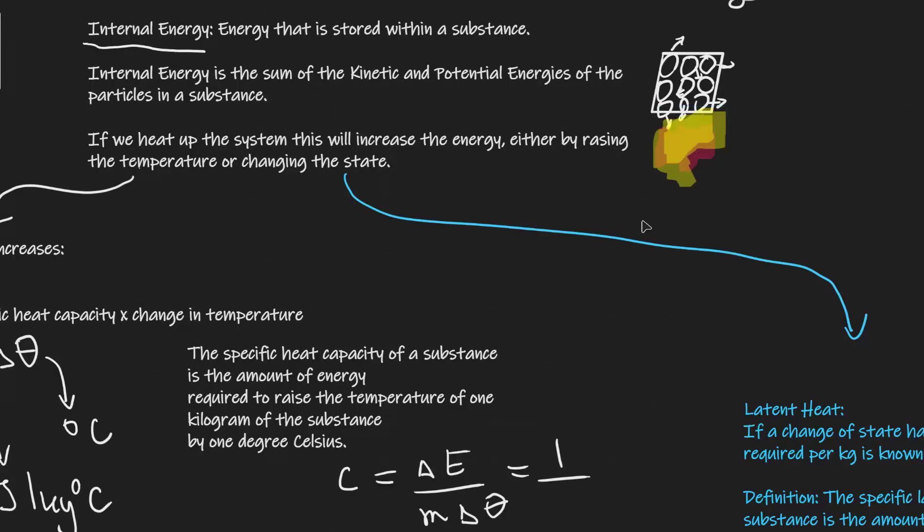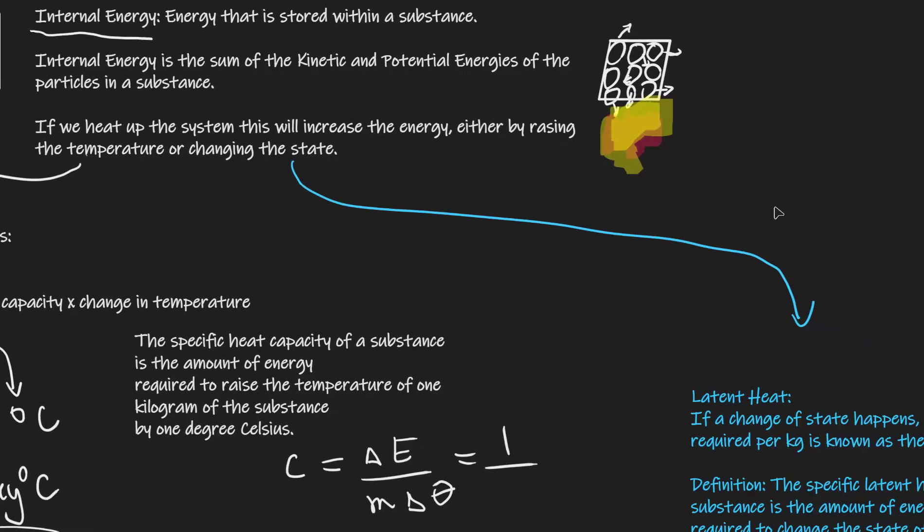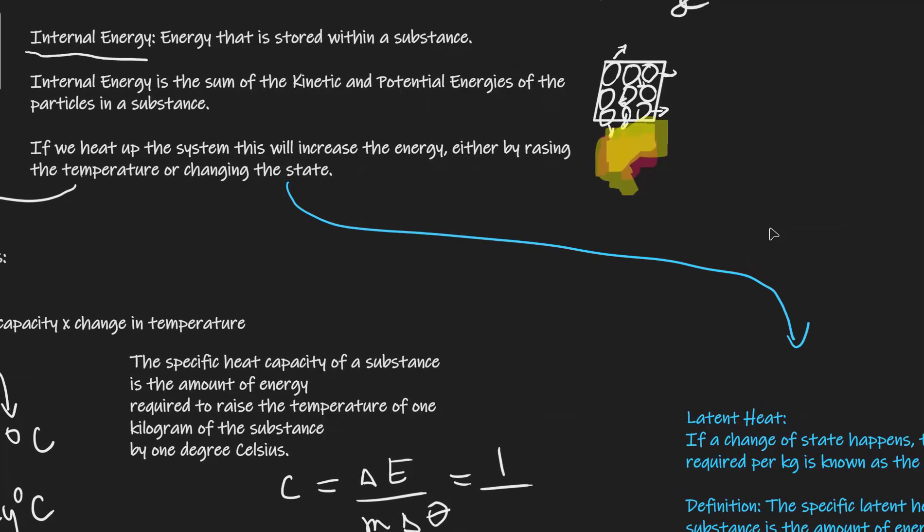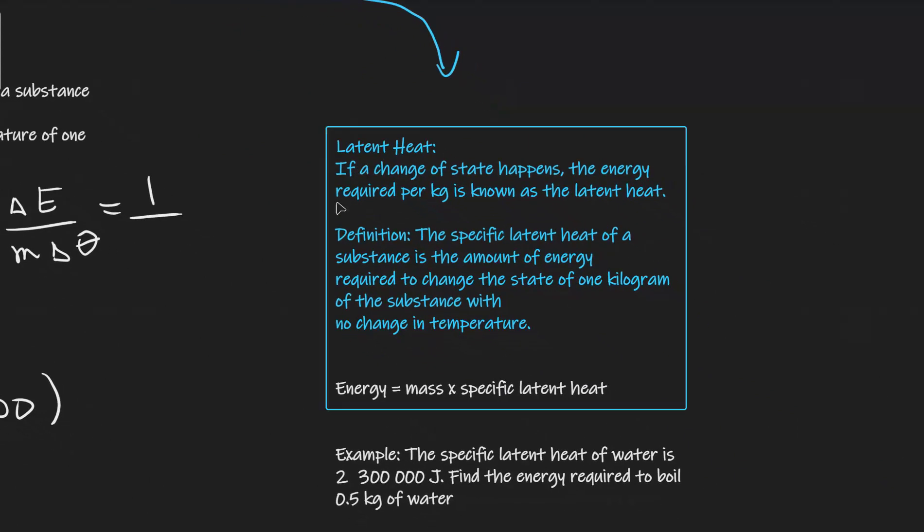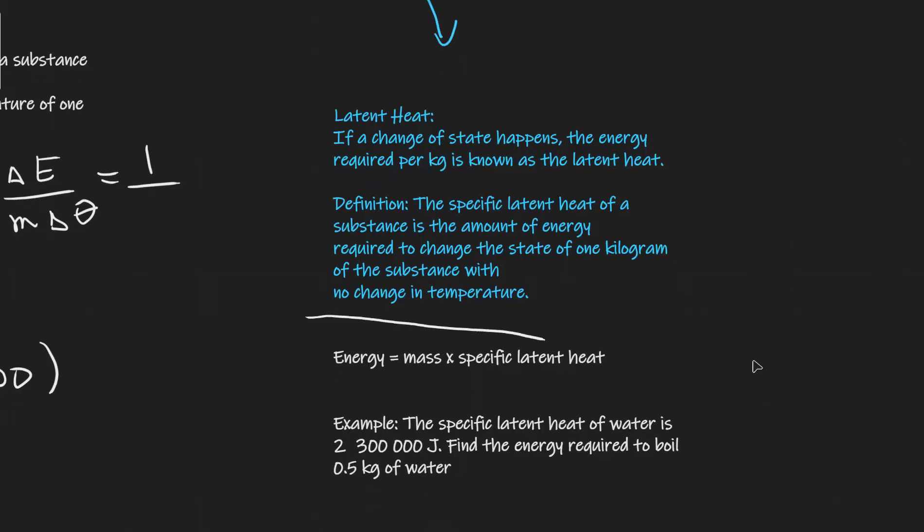Back to our diagram here. If we were to heat up the system and it's already reached its temperature at which it boils or starts to melt, then the system will start changing state. If that's the case, what we need to be considering is latent heat. If a change of state happens, the energy required per kilogram is known as the latent heat. The official definition is that the specific latent heat of a substance is the amount of energy required to change the state of one kilogram with no change in temperature. The last bit is really important. For instance, if we're melting ice, the temperature of the ice remains exactly the same until the very last bit of ice has melted.